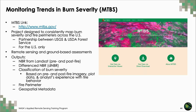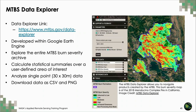MTBS has a few tools available online. The first is their Data Explorer, a relatively new tool developed in Google Earth Engine. You can explore the MTBS burn severity archive, though the current archive is limited to burn severity estimates from 2018 and earlier. The Data Explorer also allows you to create summary statistics within the interface over a user-defined area, analyze single-point data at 30 by 30 meter resolution, and download data directly as a CSV or PNG. Here is a screenshot of burn severity from the 2018 Mendocino Complex fires in California.